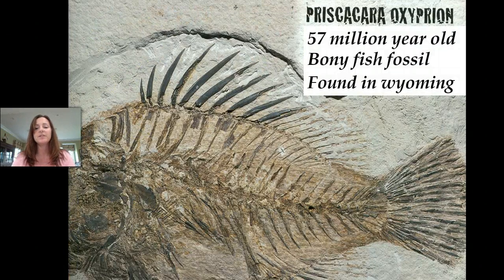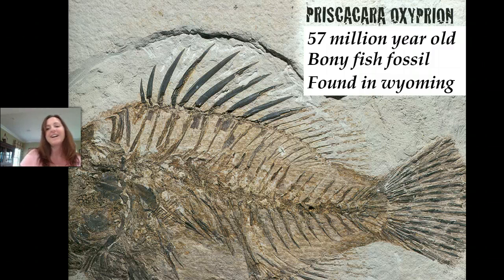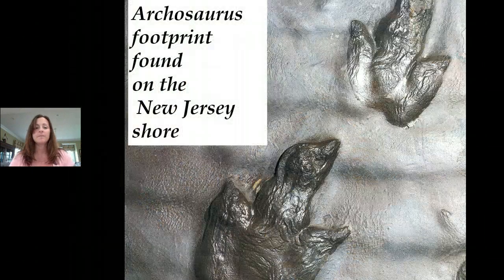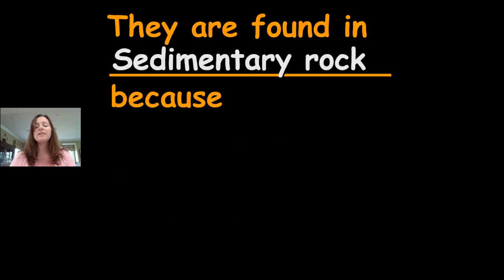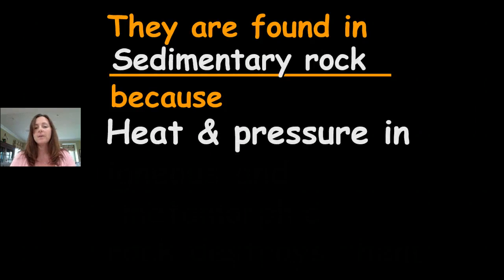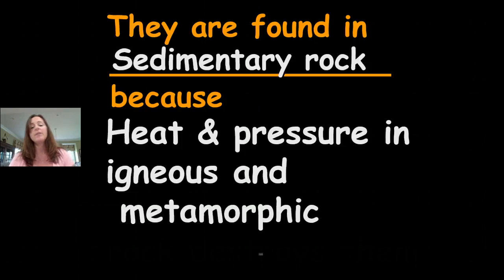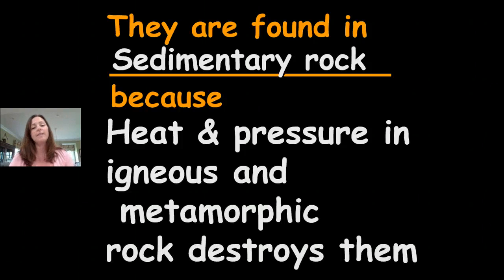Here's another fossil — this is a bony fish fossil known as Priscachara oxprion. And here we have a footprint found at the Jersey Shore. Fossils are found in sedimentary rocks, because the heat and pressure in igneous and metamorphic rocks will destroy any fossils that are starting to form in them.